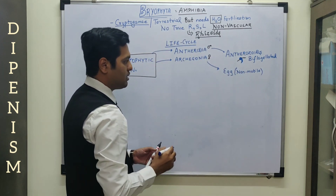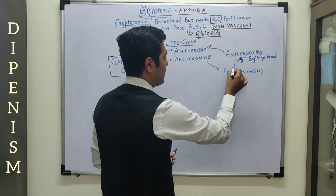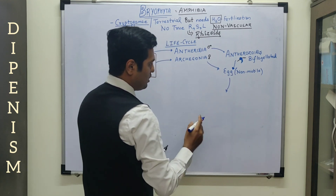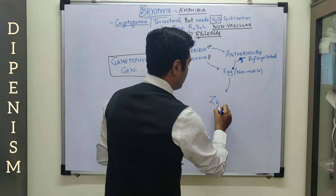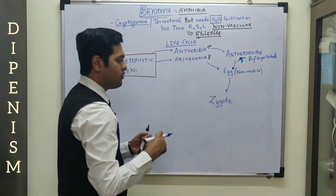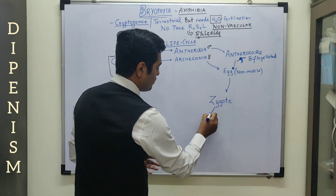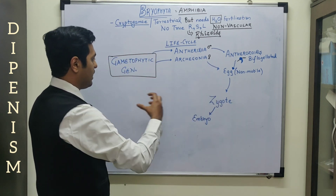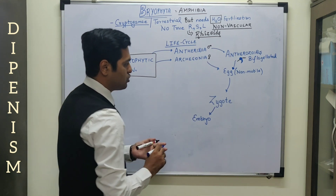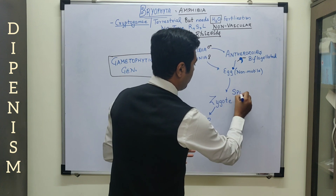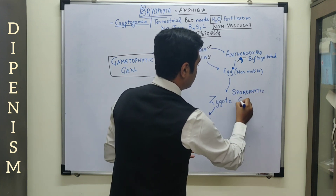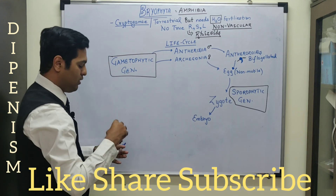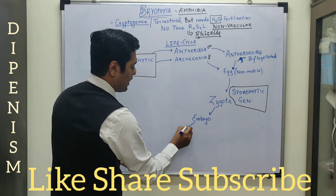Basically what happens is the male gamete is going to swim through the water and reaches up to the female gamete, that is the egg. And what results is the process of fertilization. Because of the union of the gametes, the next cell that is produced is going to be the zygote. This zygote later on forms the embryo. And from the start of the zygote stage, the cycle has now turned and a new generation is formed — that is going to be the sporophytic generation.